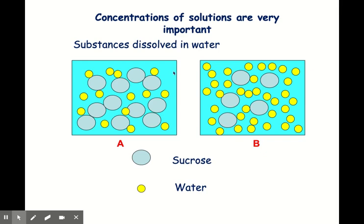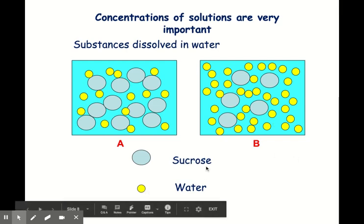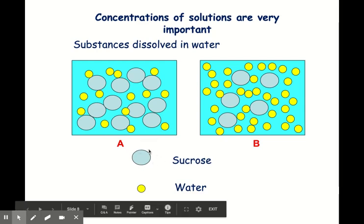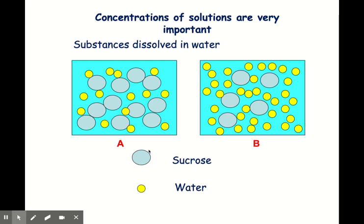Looking at these two diagrams with circles representing particles: the blue-grey circles represent the sugar sucrose and the smaller yellow circles represent water. Which solution has a higher concentration of water — A or B? B would be correct because there's a higher number of water particles in solution B. Now looking at sucrose instead: which solution has the higher concentration of sucrose? A is correct because A has a high concentration of sucrose — there are lots of those particles — whereas B has a lower concentration.